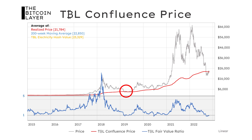In 2019, Bitcoin spent 13 days below its confluence price during a large flush in the first quarter of the year. In 2020, when the pandemic started, Bitcoin crashed 50% in only a matter of hours and spent just two days below its confluence price. This year, Bitcoin has spent 40 days below a ratio of one, meaning it has spent a significant amount of time trading below the average valuation we believe Bitcoin to be worth.